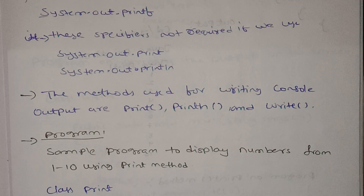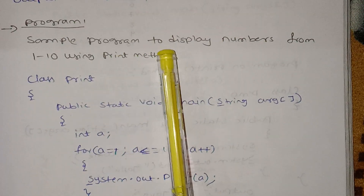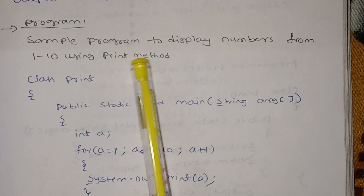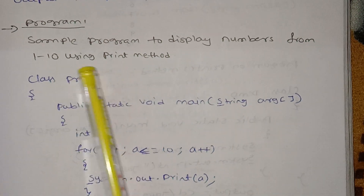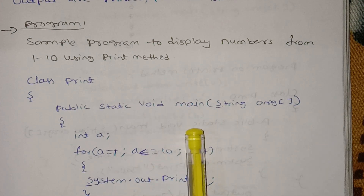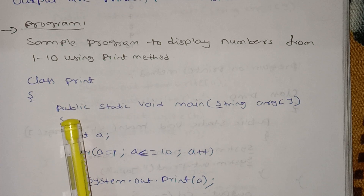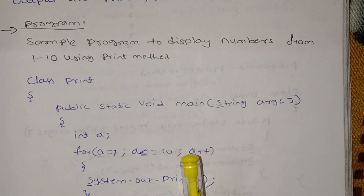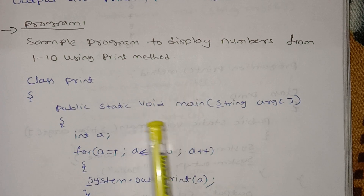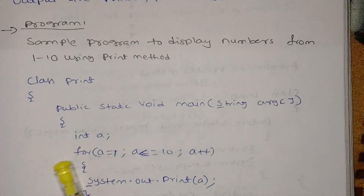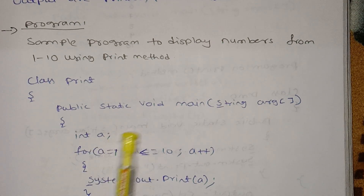We should use print, println, and write. A sample program to display the numbers from 1 to 10 using println. The class name is println. public static void main — public is the access specifier, and main is where execution starts. We should use static so we can access the program without object creation.